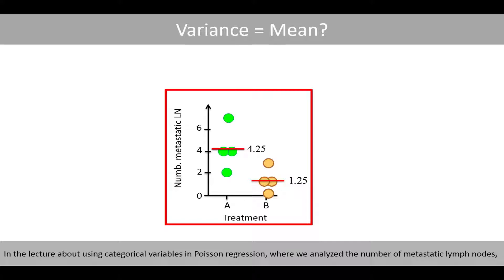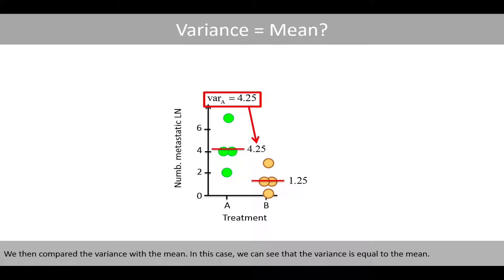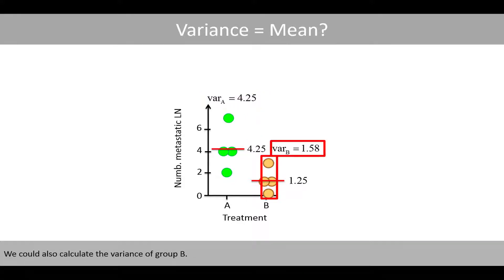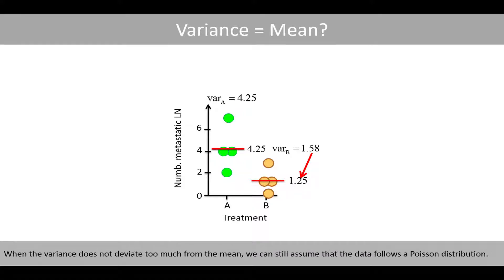In the lecture about using categorical variables in Poisson regression, where we analyzed the number of metastatic lymph nodes, we could easily estimate the variance based on the four data points in group A and compare the variance with the mean. In this case, we can see that the variance is equal to the mean. We could also calculate the variance of group B; in this case, the variance is a bit larger than the mean, which might be due to sample variation since the variance and the mean have been estimated based on just four data points. When the variance does not deviate too much from the mean, we can still assume that the data follows a Poisson distribution.